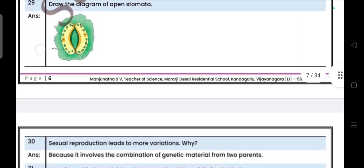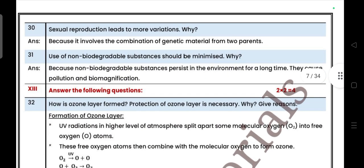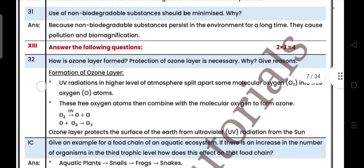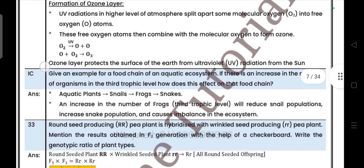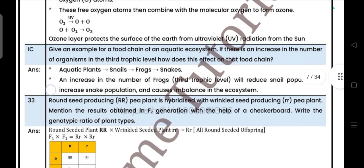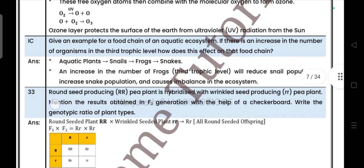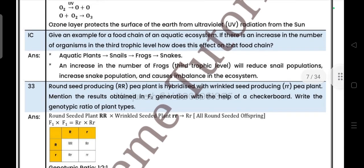Next main, two marks. Draw the diagram of open stomata, you have to draw a diagram. Sexual reproduction leads to more variations because it involves the combination of genetic material from two parents. Use of non-biodegradable substances should be minimized because non-biodegradable substances persist in the environment for a long time, they cause pollution and biomagnification. Next, two marks. How is ozone layer formed? Protection of ozone layer is necessary, give a reason. Give an example for food chain of aquatic ecosystem. If there is an increase in the number of organisms in the third trophic level, how does it affect the food chain?